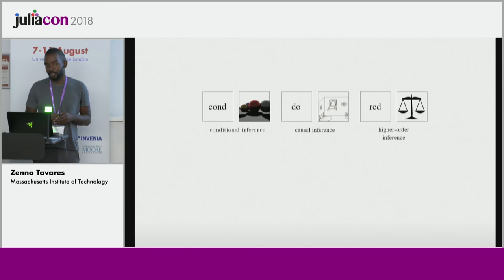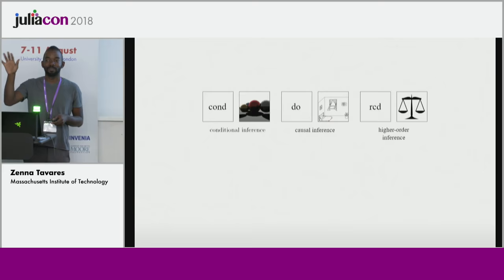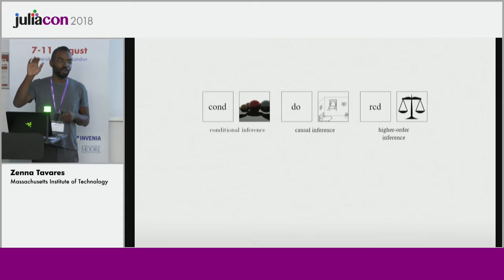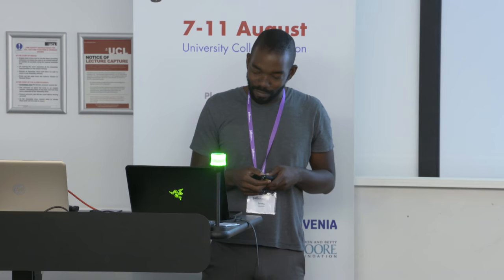This talk is roughly divided into three parts. The first part is about conditional inference — can I get a show of hands if you know what conditional or posterior inference is? The second part is about causal inference and interventions. And the last part is about higher-order inference using something called the random conditional distribution. I shouldn't really see any hands for that last one, because we just submitted a paper on it last week — so if you raised your hand you must be my reviewer or my friend.